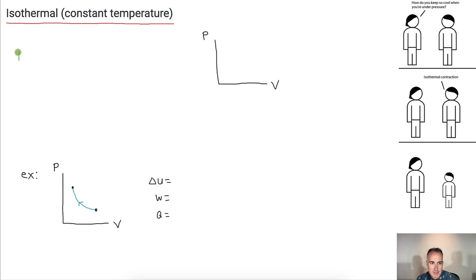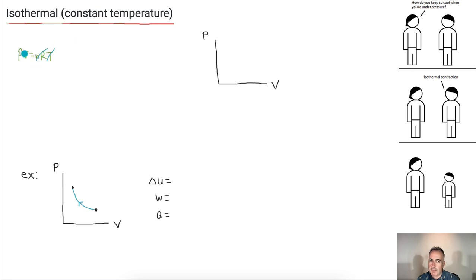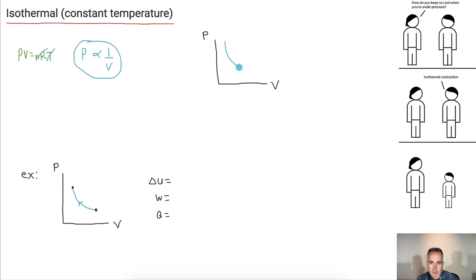We've got PV equals nRT, just like before. This time we ignore temperature since it's constant. If we get P by itself, we get P is proportional to one over V. That's a reciprocal graph — it looks like y equals one over x.